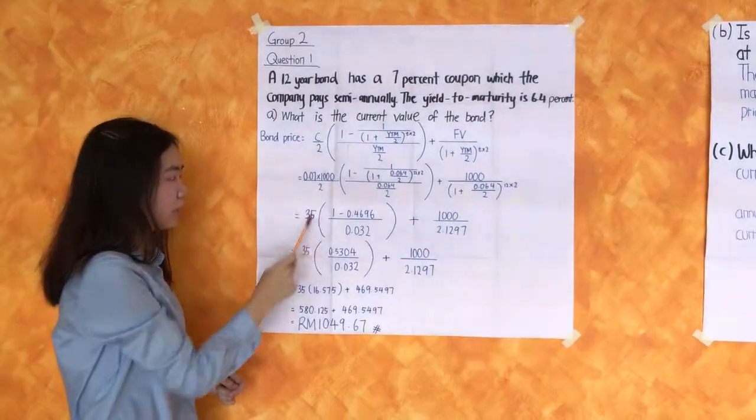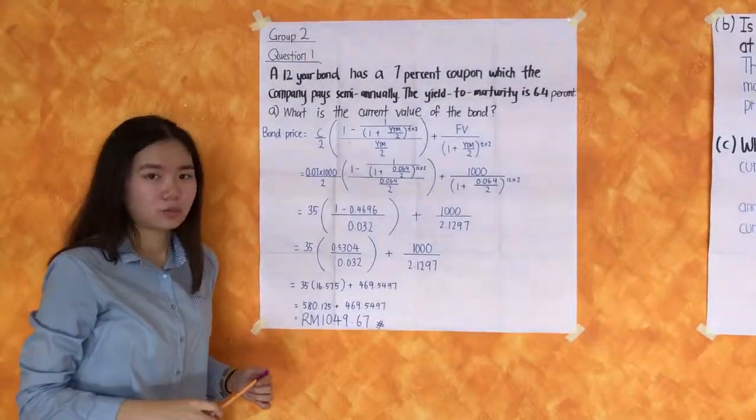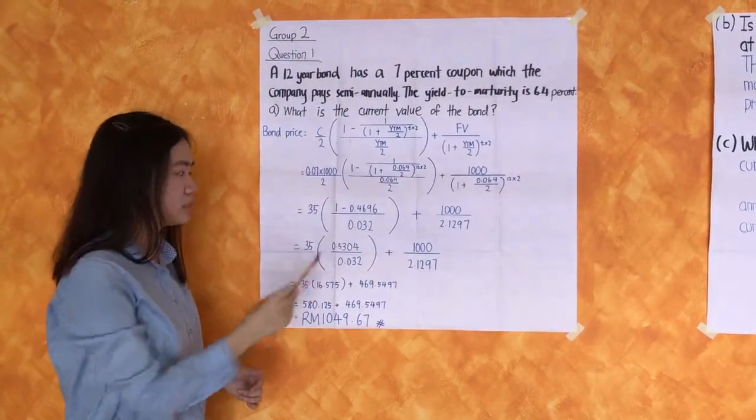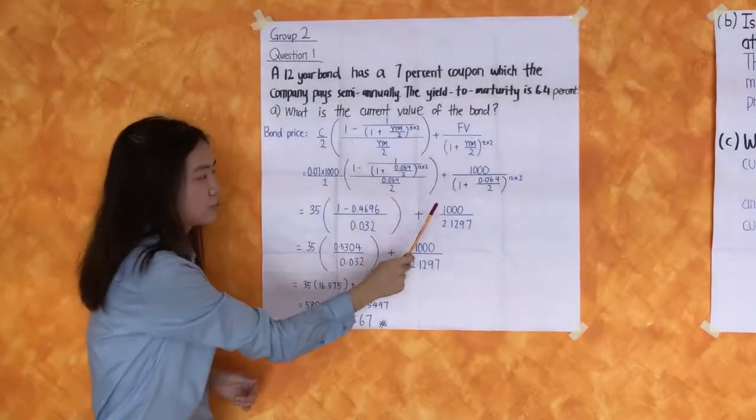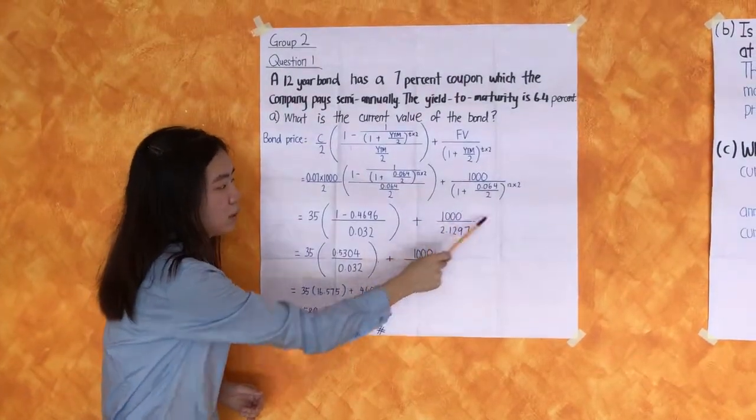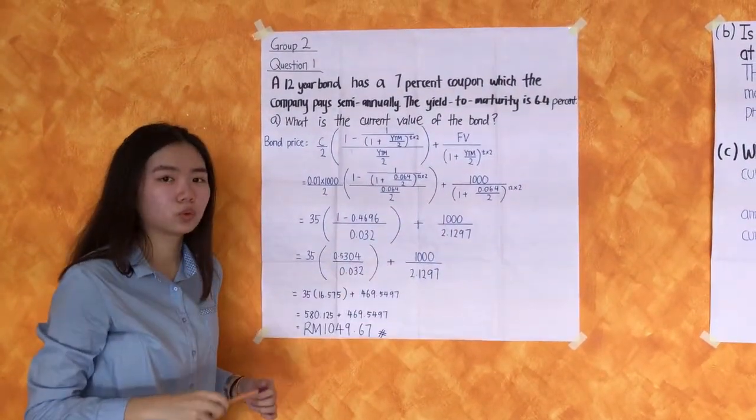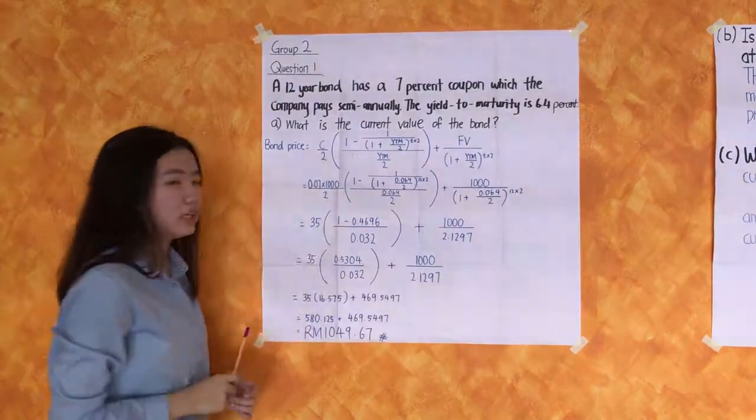...35 times 1 minus 0.4696 divided by 0.032, plus FV 1000 divided by 2.1297.